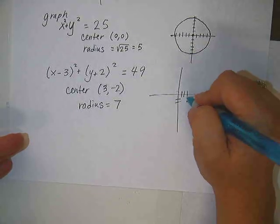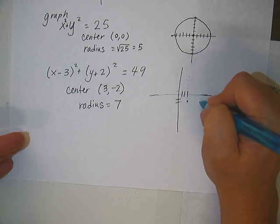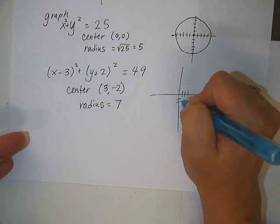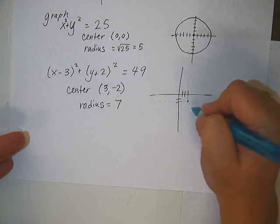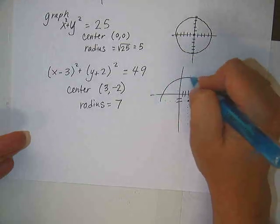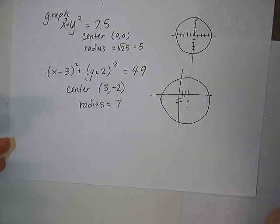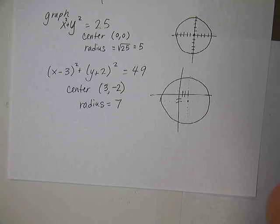Okay, so then to graph this, we would go to the right 3 and down 2, put our center, and then just count 7, 3, 4, 5, 6, 7. I don't expect perfection. And there's roughly where our circle is. That one isn't quite as circular, but it's close. Okay, does this sound familiar?